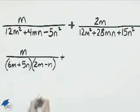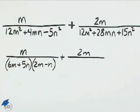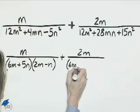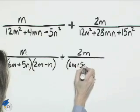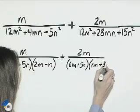And we'll add the second fraction. 2m, the denominator here is 6m plus 5n and 2m plus 3n.